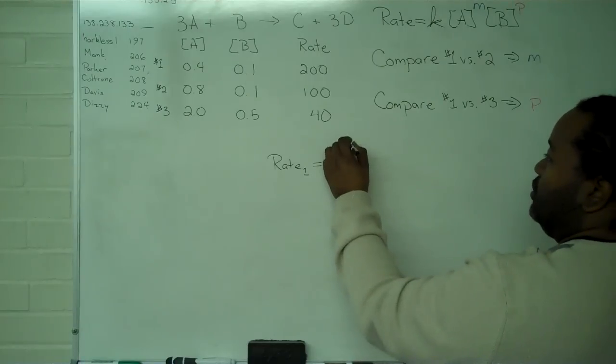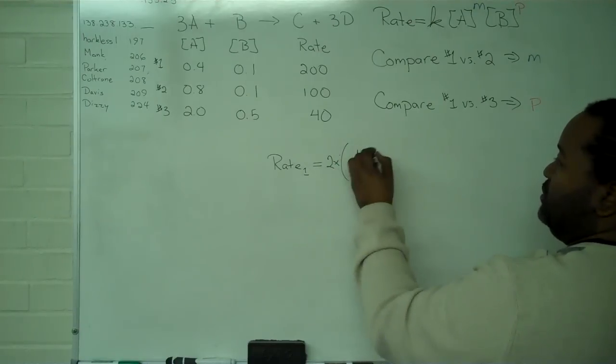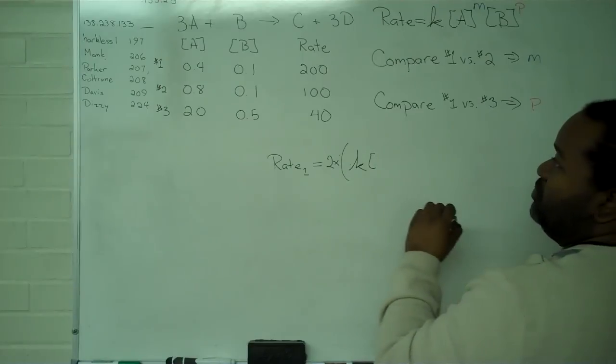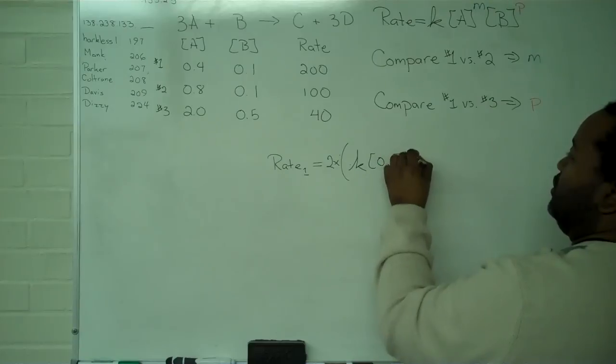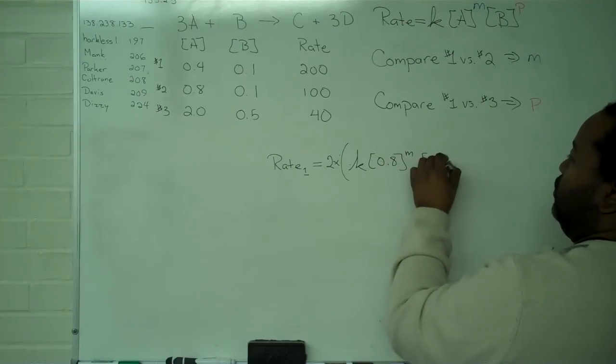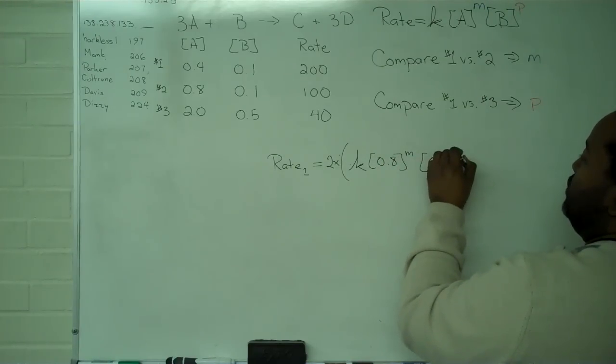It's going to be the equilibrium constant times the concentration of A, which is 0.8 raised to the M, and 0.1 raised to the P.